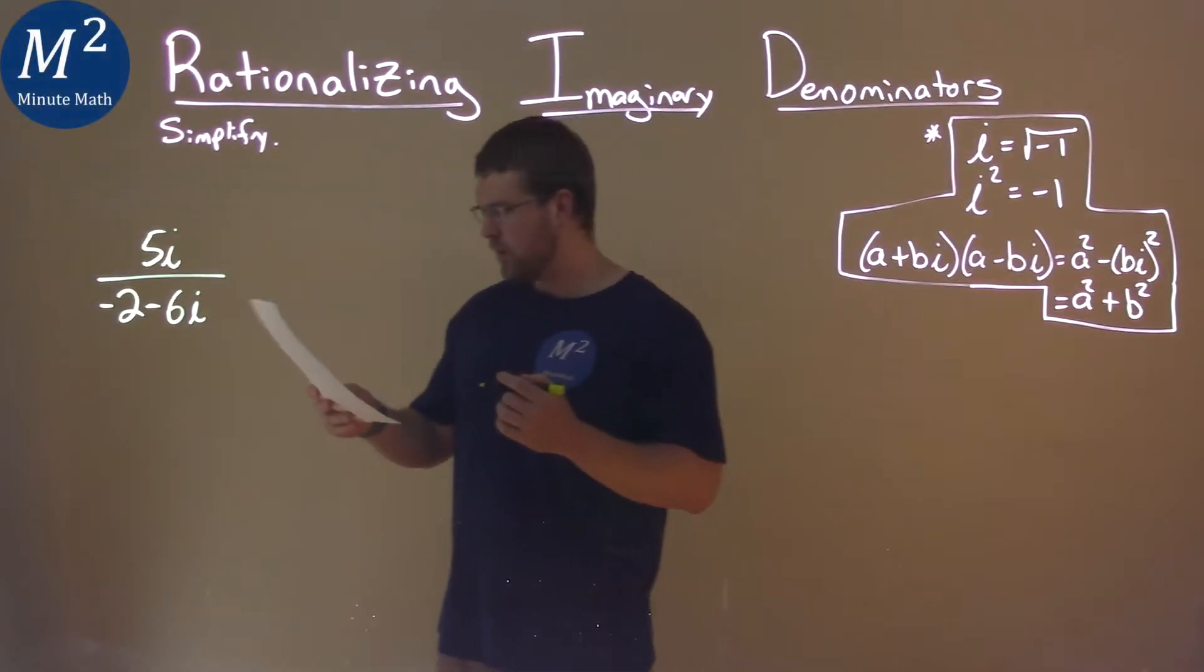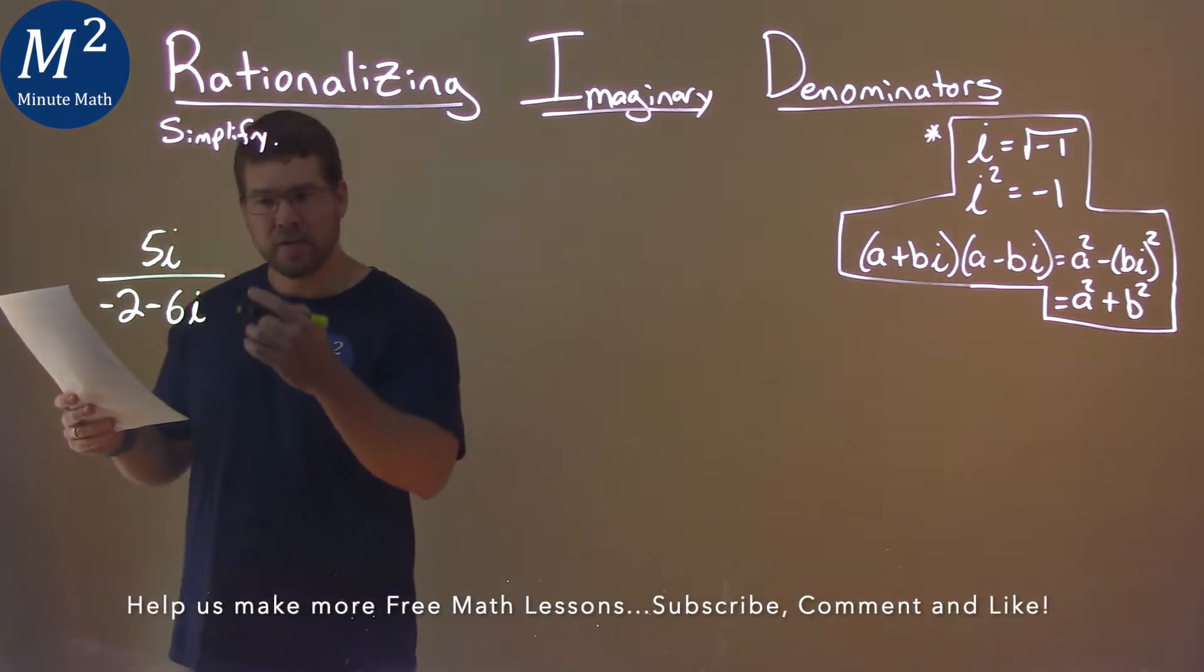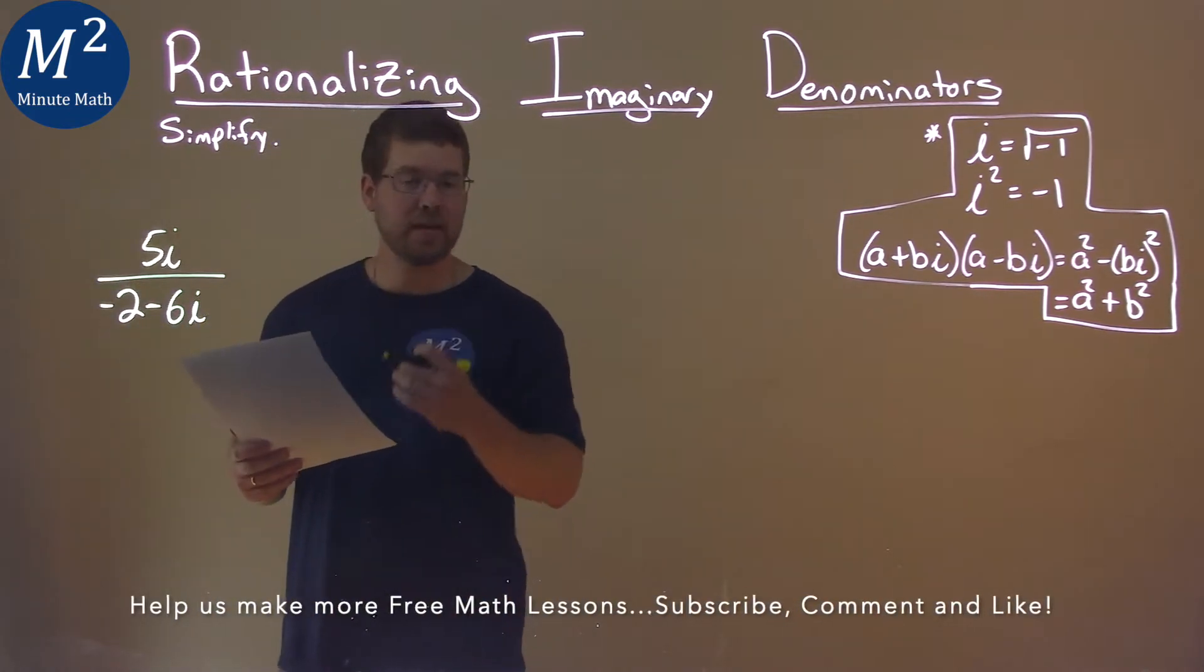We're given this problem right here: 5i over negative 2 minus 6i, and we've got to simplify.